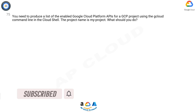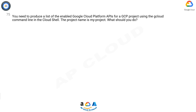You need to produce a list of the enabled Google Cloud Platform APIs for a GCP project using the cloud command line in the cloud shell. The project name is MyProject. What should you do?